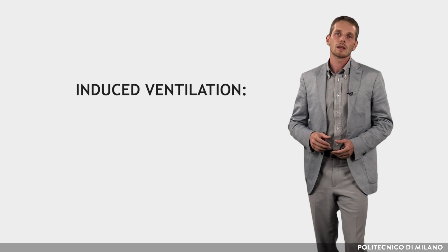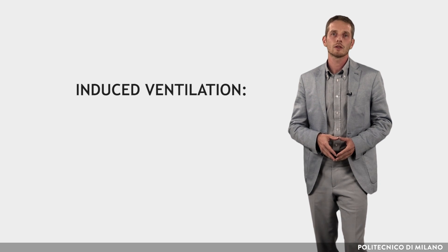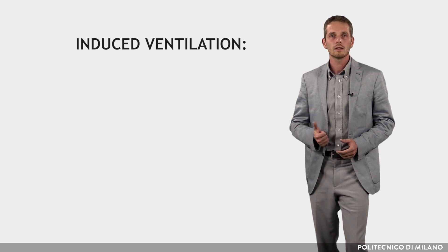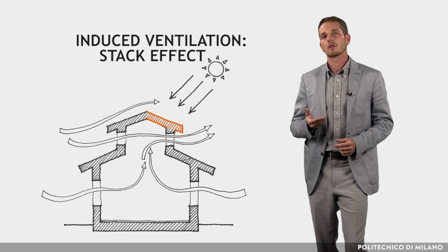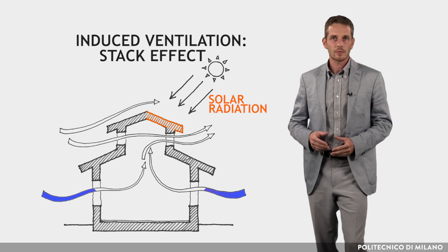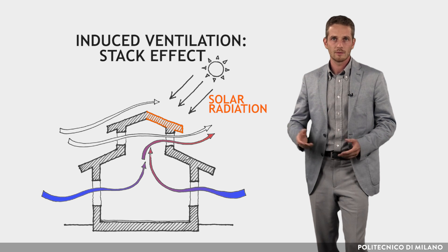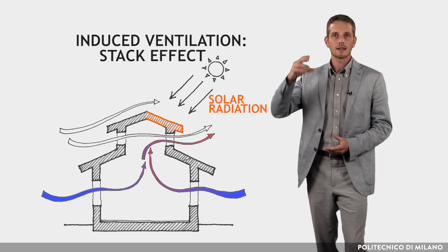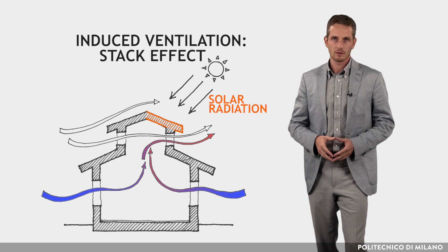Induced ventilation can be very effective in hot and humid climates as well as in hot and dry climates. Ventilation can be induced in three ways. One way involves heating air in a restricted area through solar radiation, thus creating a temperature difference and causing air movements as in solar chimneys. The draft causes hot air to rise and escape outdoors, drawing in cooler air and thereby causing cooling.